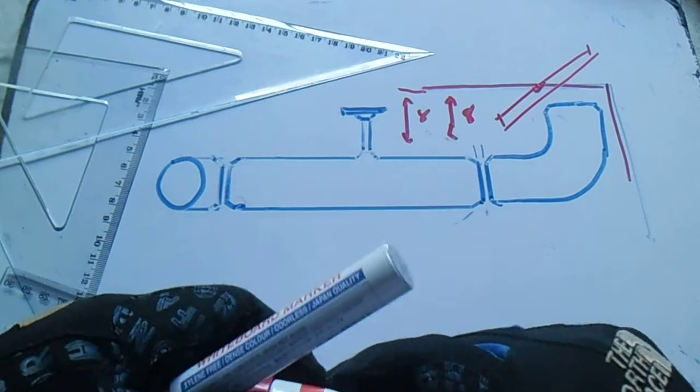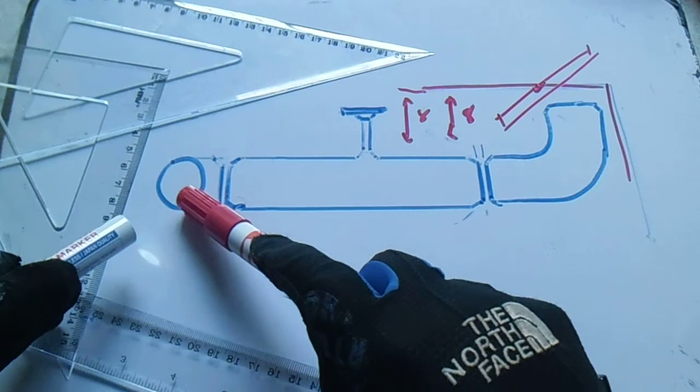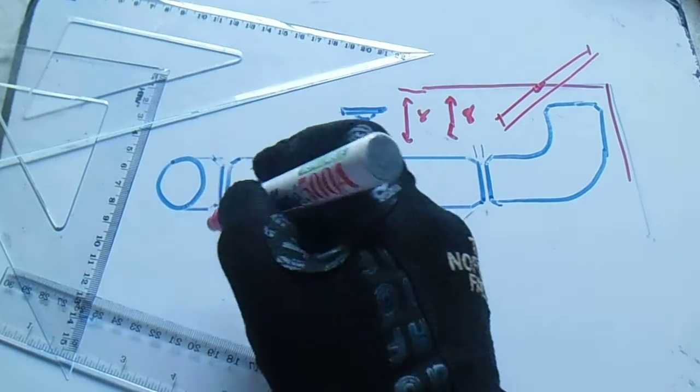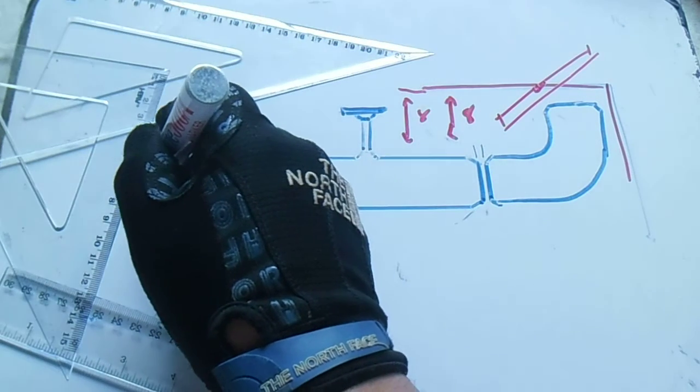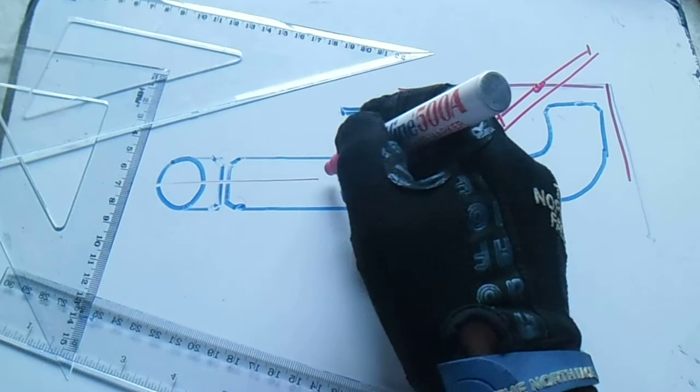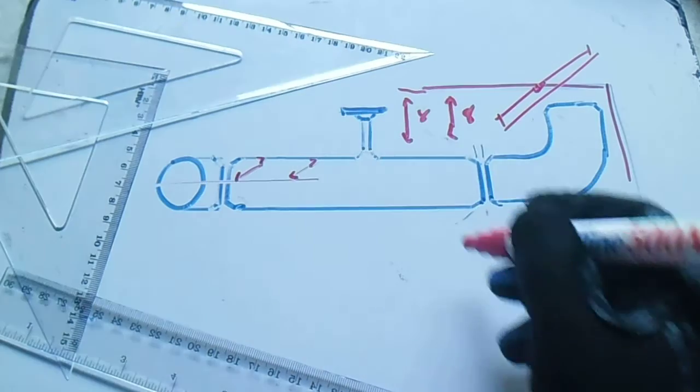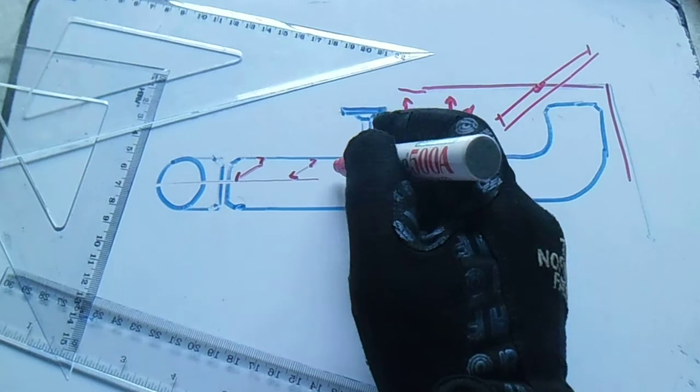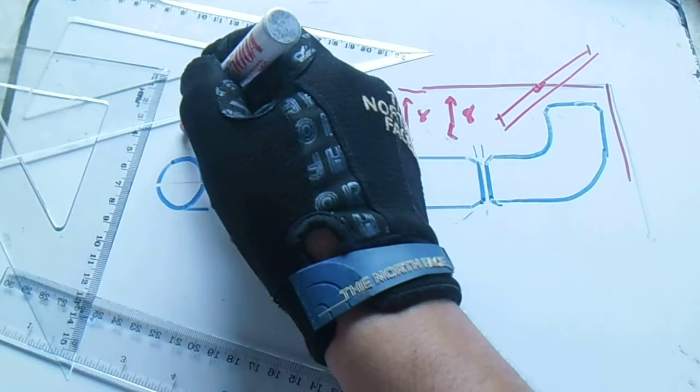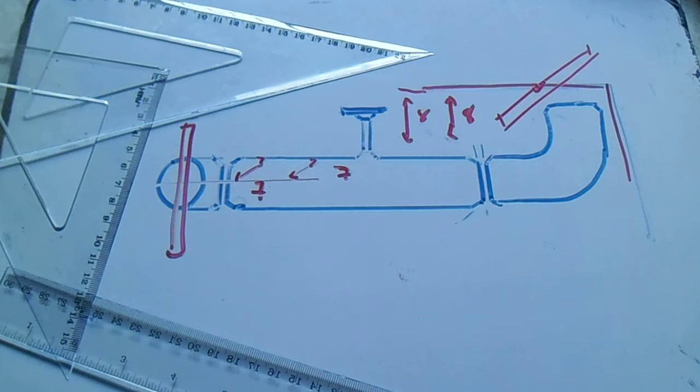The same procedure with this. This is also an elbow ninety degrees. So place your right angle here and then measure side by side. This is seven, this is seven. And then put the spirit level here and check the alignment.